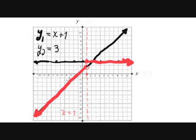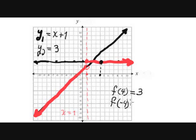Let me evaluate some points. For x = 4, the value is clearly 3 from the graph. For x = -4: since -4 < 1 we use the first piece: f(-4) = -4 + 1 = -3. The answer is negative 3.